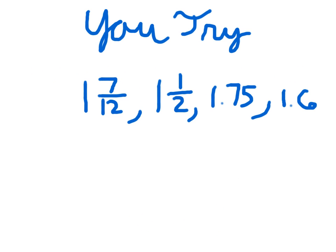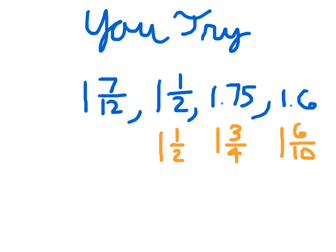Here's one last one for you to try. We've got 1 and 7 twelfths, 1 and 1 half, 1 and 75 hundredths, and 1 and 6 tenths. Hit pause. If we work this out, we've got 1 and 3 fourths, 1 and 6 tenths, 1 and 1 half, and 1 and 7 twelfths.